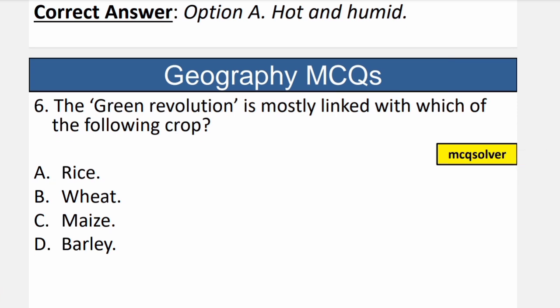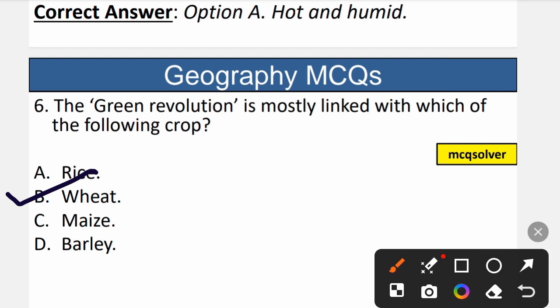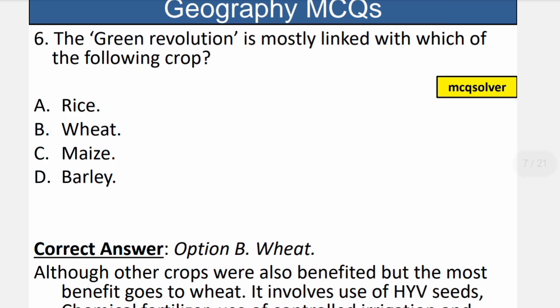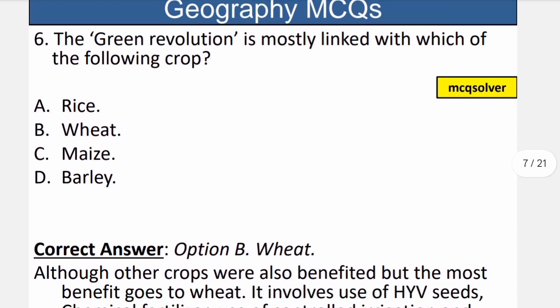Question number 6: The Green Revolution is mostly linked with which crop? The correct option is B — wheat. The Green Revolution was started in India in the mid-1970s and early 1980s. Although other crops were promoted, wheat was the most benefited crop. Key features included high yield variety seeds, chemical fertilizers, controlled irrigation, and mechanization of agriculture. So B is the correct option.